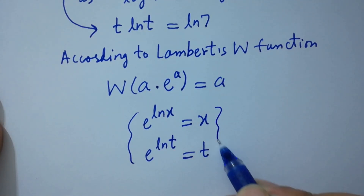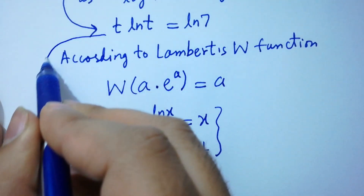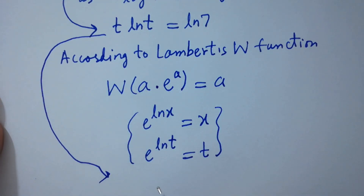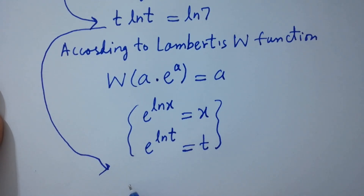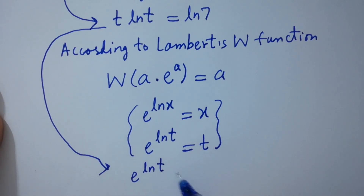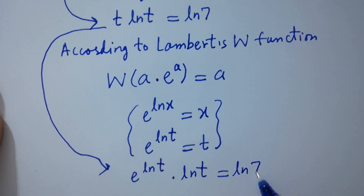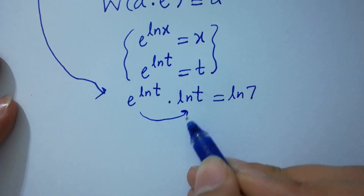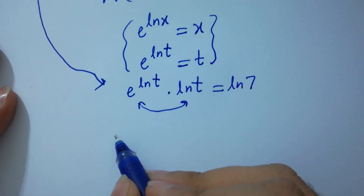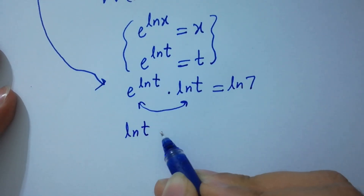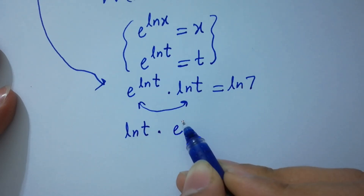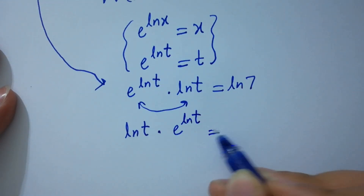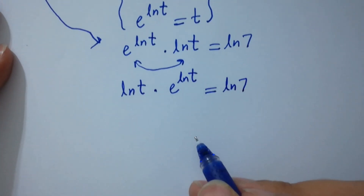Then we have e^(ln t) · ln t = ln 7, which can be rearranged as ln t · e^(ln t) = ln 7.